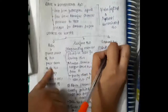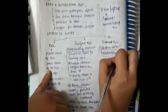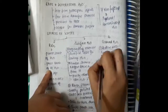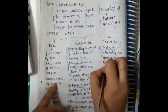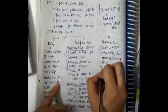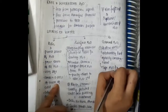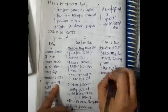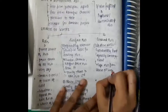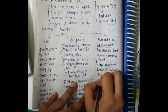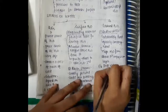Ground water can be from shallow wells. Shallow wells contain moderately hard water and are grossly contaminated. Shallow wells tap water from above the first impervious layer.